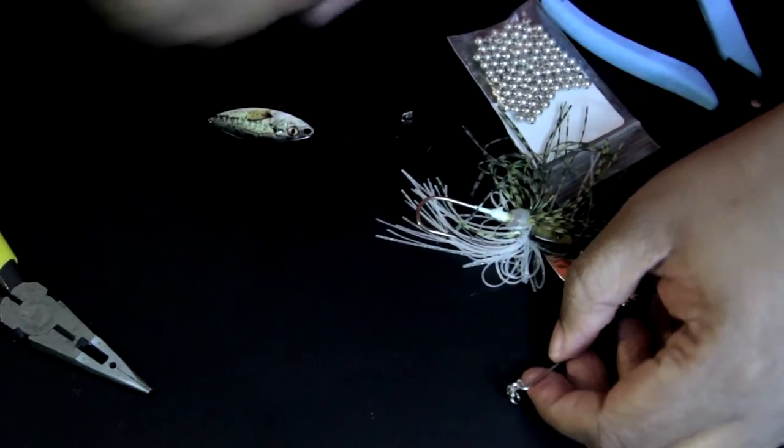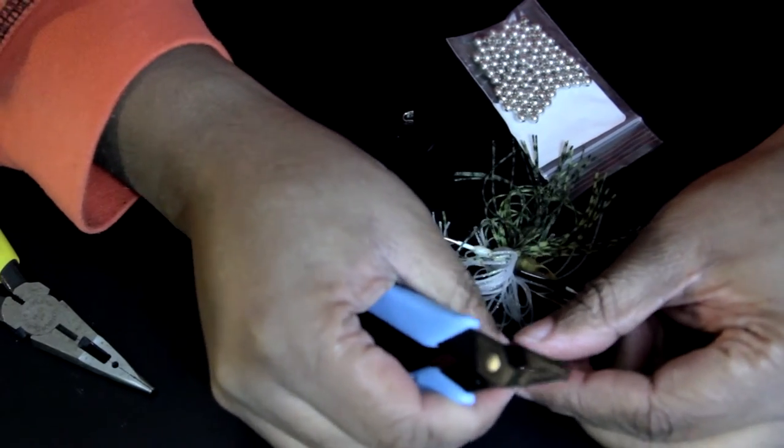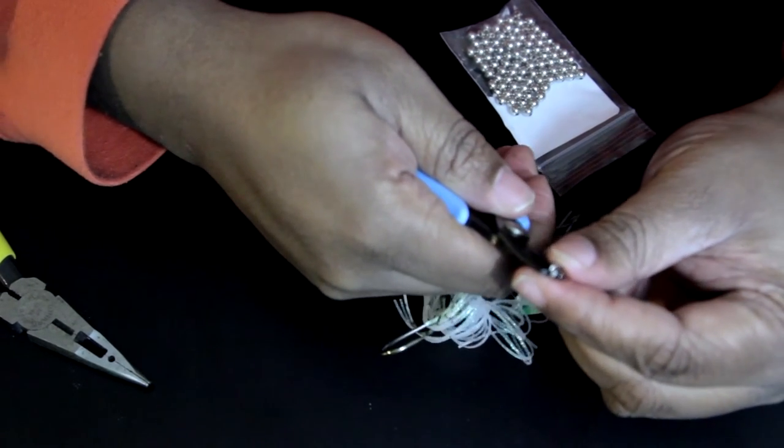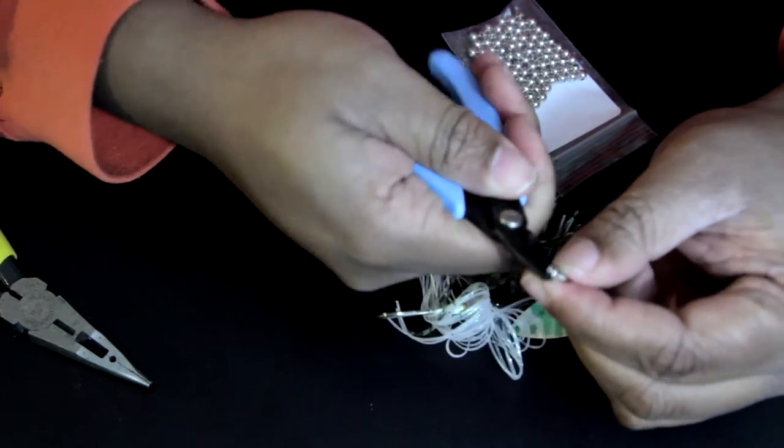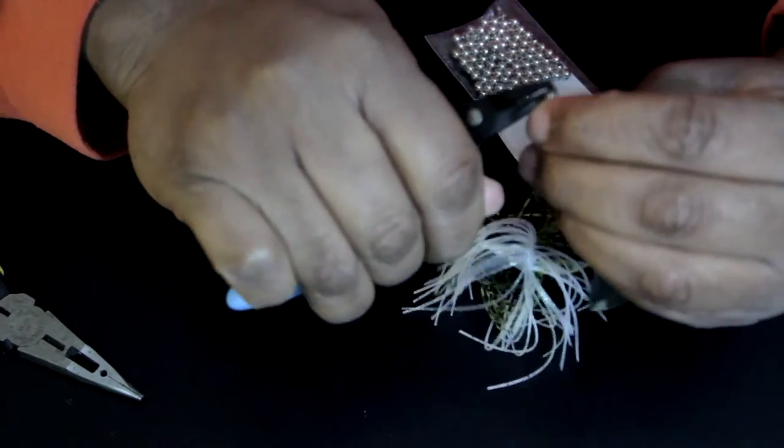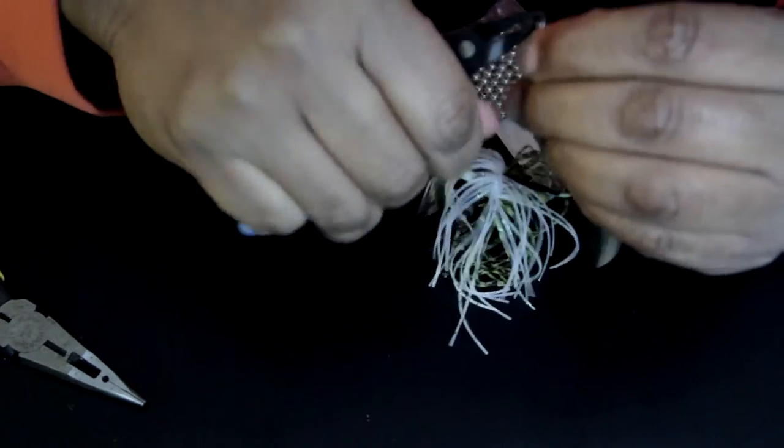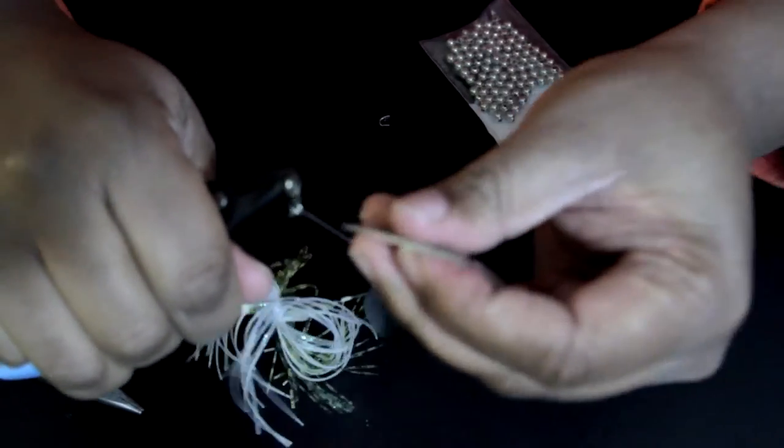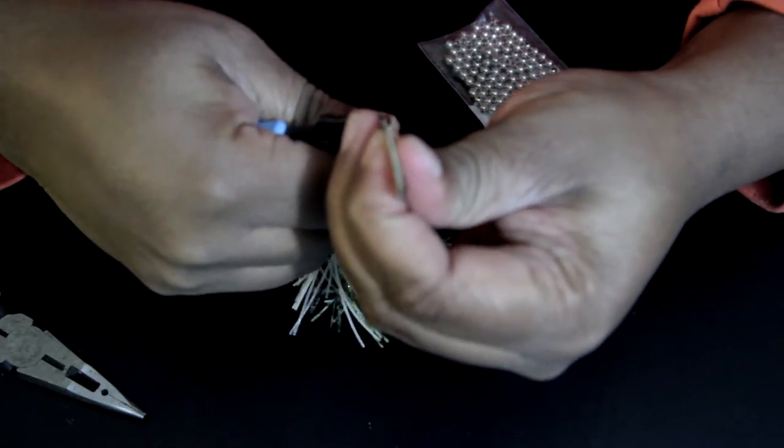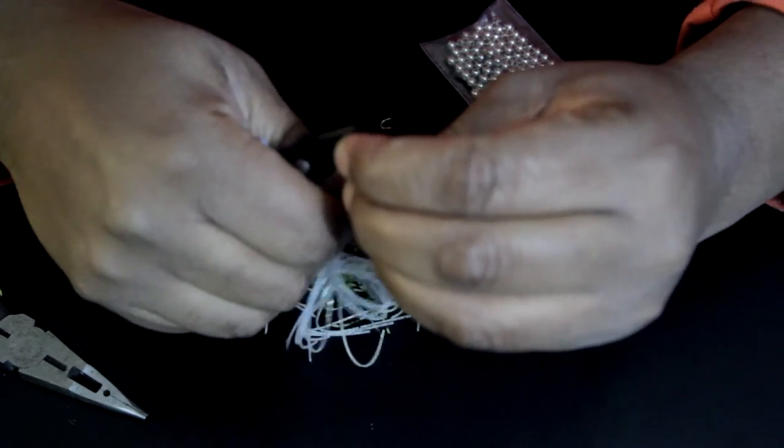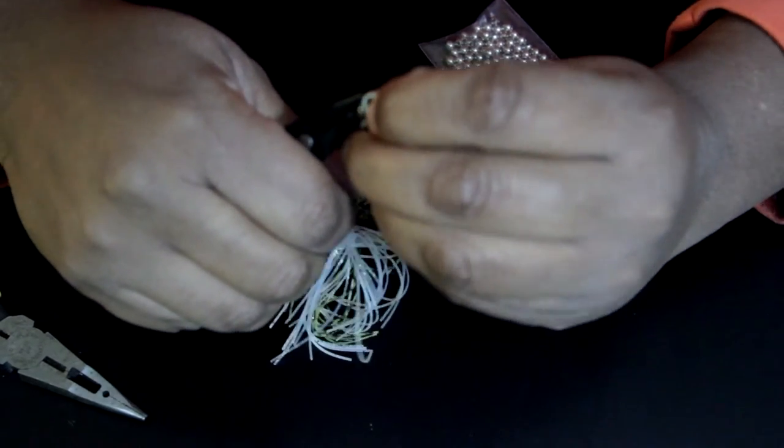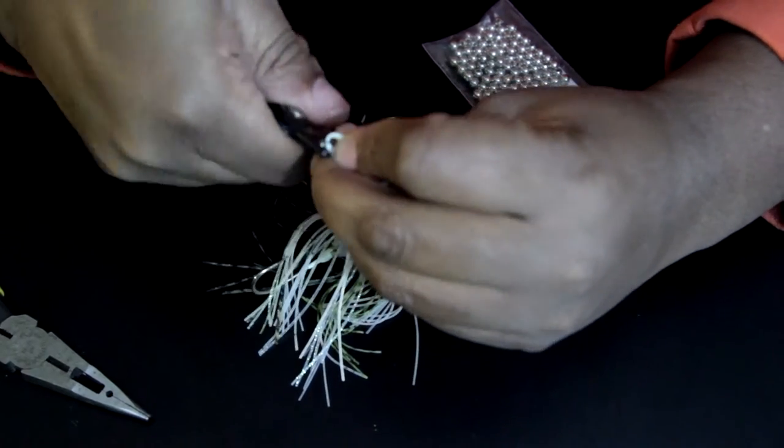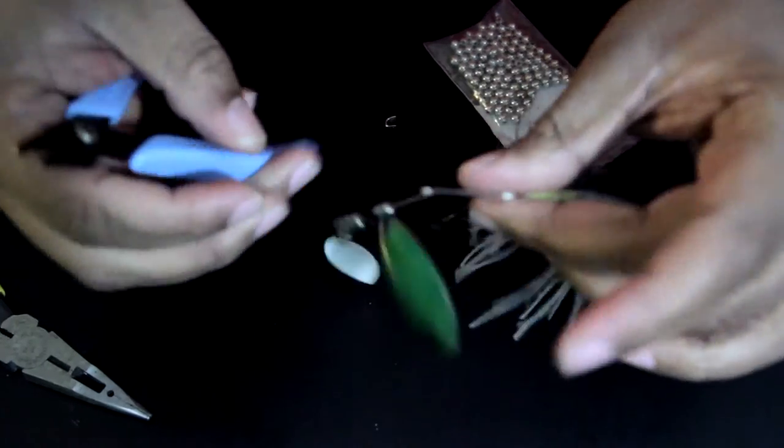And then I'm going to take my split ring pliers and I'm going to put the other willow blade on. I'm just going to open on the opening here. Get yourself a pair of these split ring pliers because it makes all the difference. Boom. That's on there.